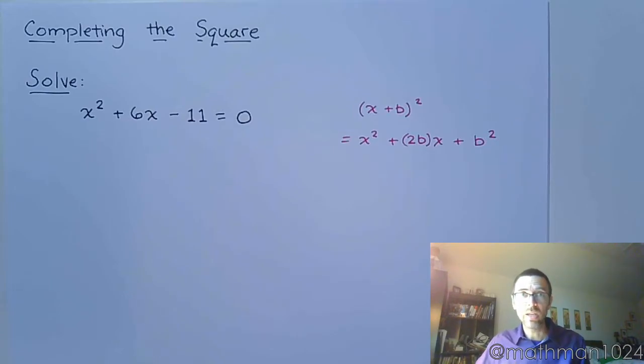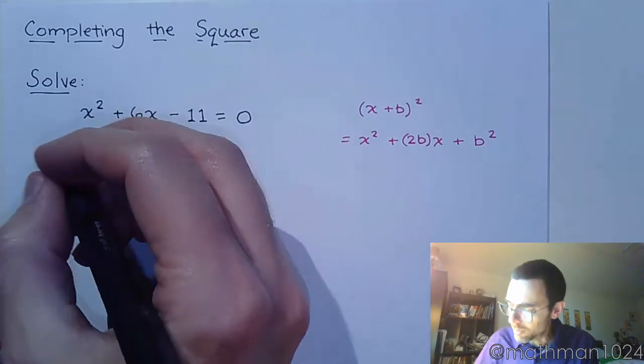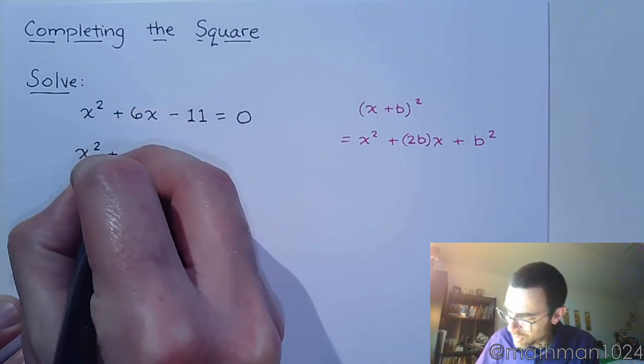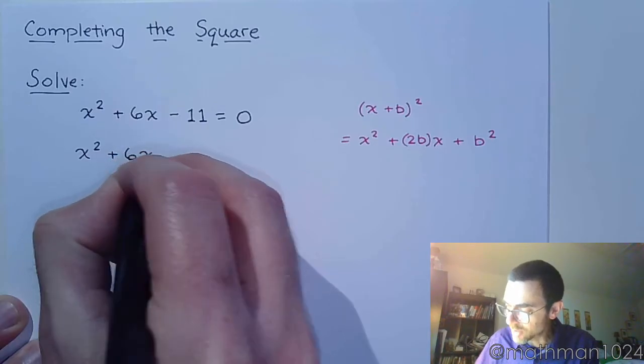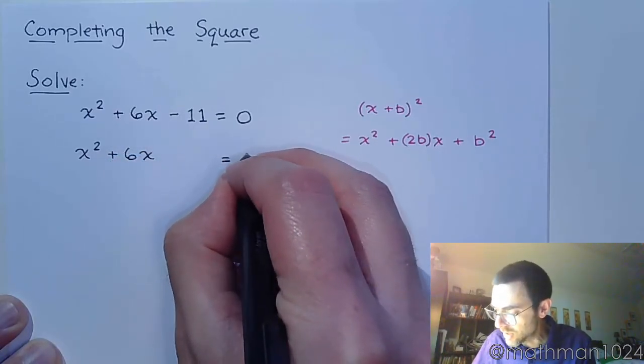So in order to complete the square, the first thing we want to do is to move the 11 to the other side, because right now he is just in the way.